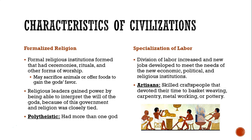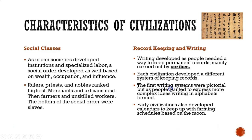The specialization of labor increased and new jobs developed to meet the needs of the people. A new skill called artisanism emerged — skilled craftsmen who devoted their time to basket weaving, carpentry, metalworking, or pottery. Social classes also developed. As specialization occurred, there was social stratification with different jobs having different places in society, based on wealth, occupation, and influence. Rulers, priests, and nobles ranked the highest; merchants and artisans were next; then farmers and unskilled workers; and at the bottom were slaves.